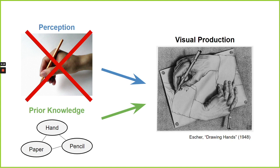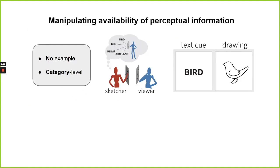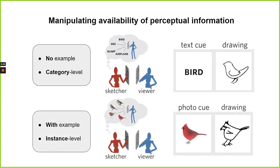To explore this hypothesis, we first designed a pilot study where we manipulated the contribution of perception in drawings, by either showing people a specific example of what to draw or not. When participants did not have access to a specific example, they were prompted with a word and asked to make their drawing identifiable to someone trying to guess the original word — this leads participants to draw an object category, and we denote this the text condition. On the other hand, when participants did have access to a specific example, they were prompted with an image and specifically asked to make their drawings identifiable from a lineup of similar images within the same object category, pushing them to draw an object instance. We denote this the photo condition.